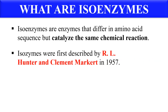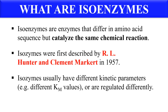They were first described by R.L. Hunter and Klemente Market in 1957. The isoenzymes, although they catalyze the same chemical reaction, they have different kinetic properties like different KM values. They are also regulated differently.